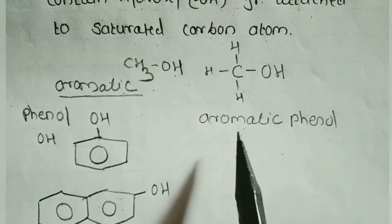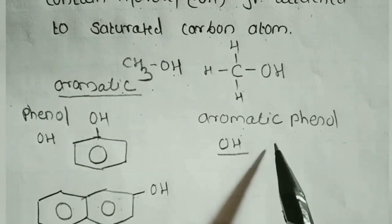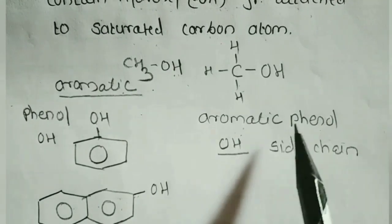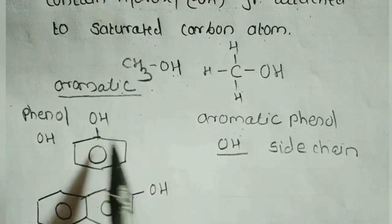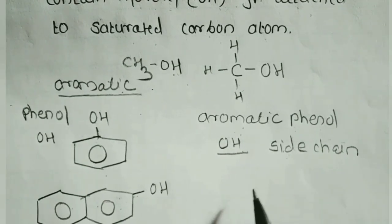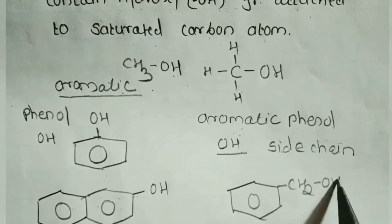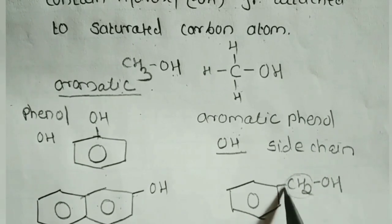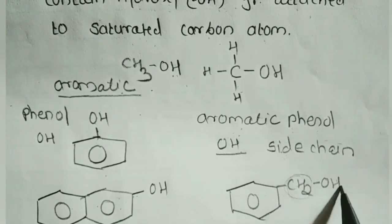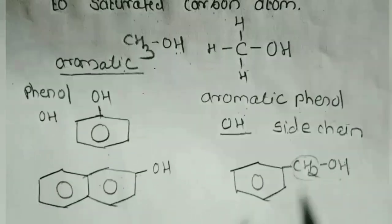The second type is aromatic alcohols, where the hydroxy group (OH) is present in the side chain of the aromatic ring, not directly attached to the ring carbon. For example, benzene–CH2OH, where OH is attached to a side chain carbon atom. This compound is called benzyl alcohol.